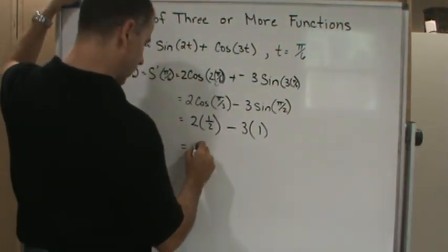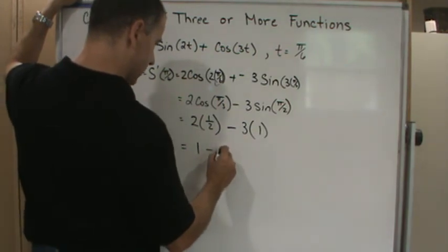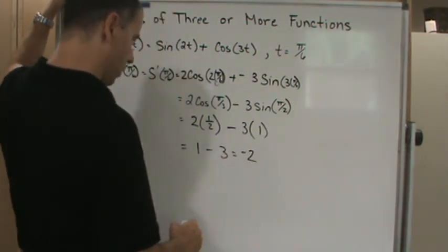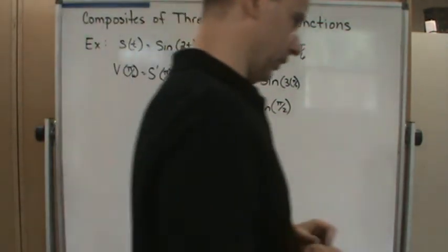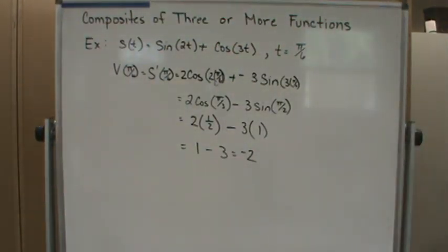So I get 1 minus 3, which equals -2. This particle has a velocity of -2. That's the answer. Have a great day.